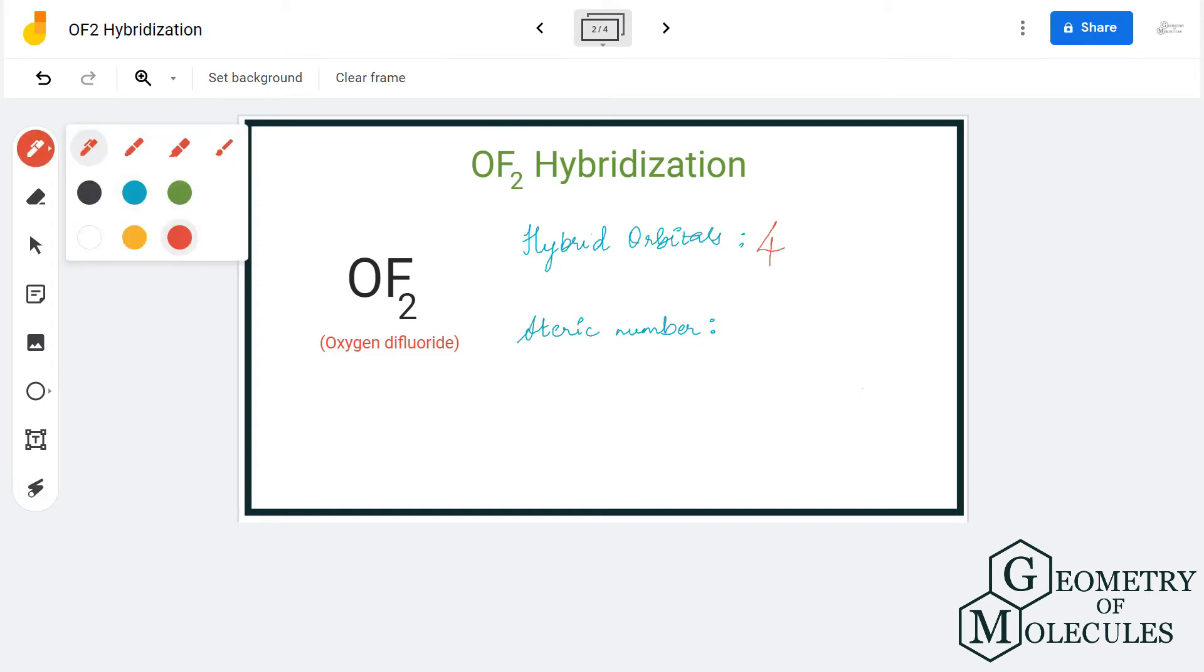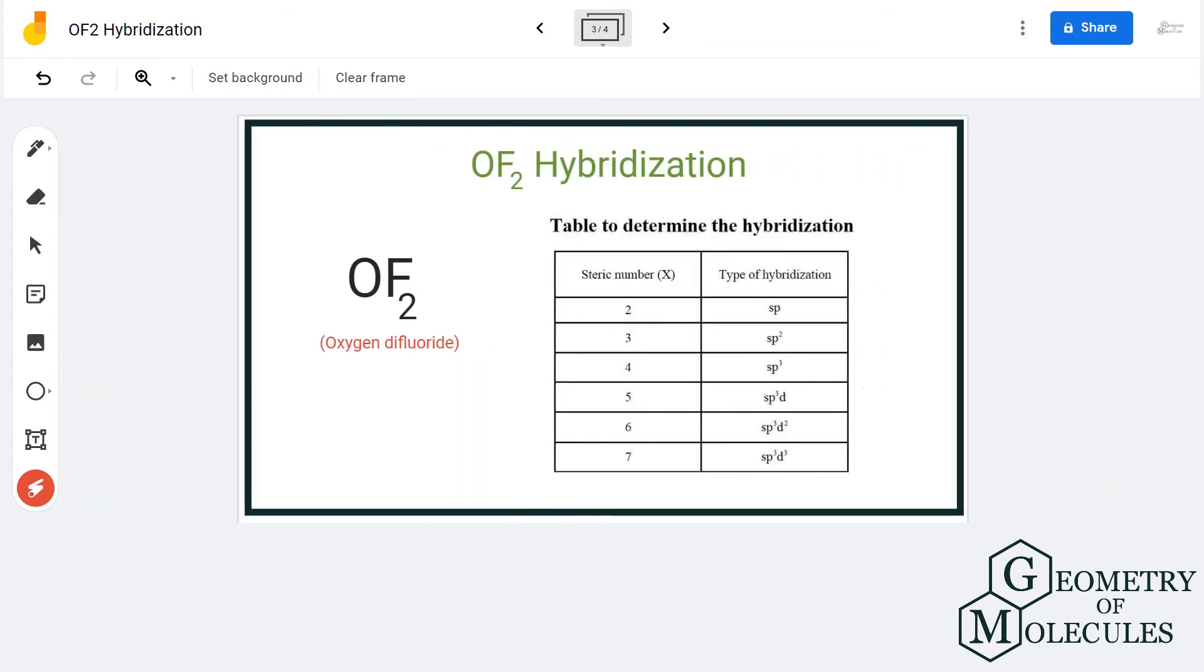You can also use the method of steric number and get the steric number, and then refer to the table. Or if you get the total number of hybrid orbitals, you can still guess the hybridization for the molecule.